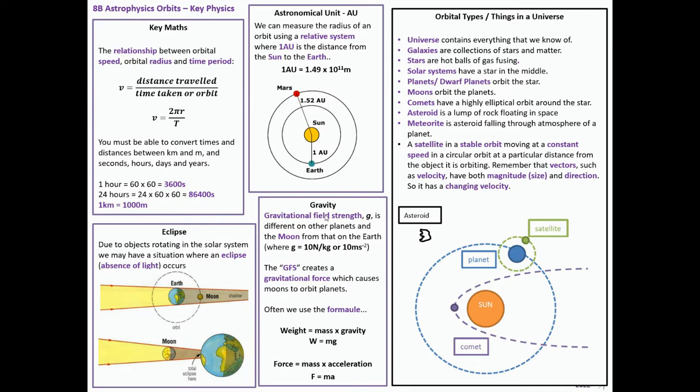Gravity then, a bit of maths-y stuff. So the gravitational field strength, it's important you call it grav field strength, GFS. G is different on the planets and the Moon from that on Earth, whereas G is 10 newtons of pull for every kilogram of matter, or 10 metres per second squared, or 10 m/s², or m/s/s. That would be on Earth. On other planets, it's different, because they are clearly different sizes, different masses, different radii. So the gravitational field strength creates a force which causes moons to orbit planets, it pulls things together. And we use the formula weight is mg, or F is ma. They're basically the same equation.